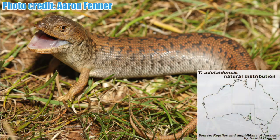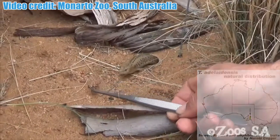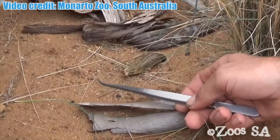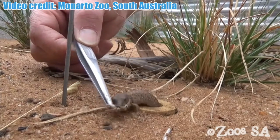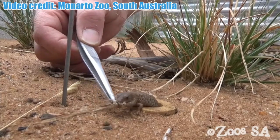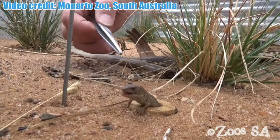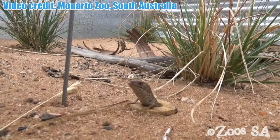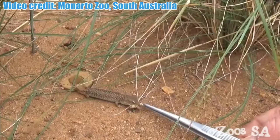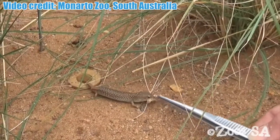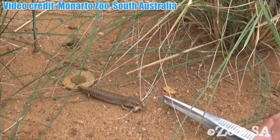The habitat of the pygmy blue tongue is restricted to grasslands in the mid-north of South Australia. Pygmies live in burrows formed by wolf and trapdoor spiders. The species was thought to have become extinct until 1992, when a specimen was incidentally found in the stomach of a road-killed brown snake. Monarto Zoo in South Australia has a captive breeding program for the conservation of these rare lizards, successfully breeding 14 offspring in January 2016.